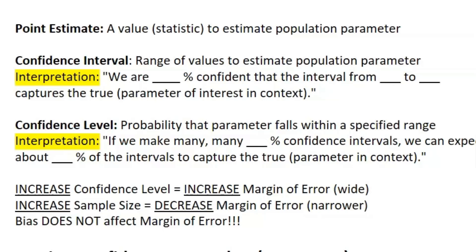Today we're going through all the content you need to know for Unit 6 of AP Stats, which is inference for categorical data — more specifically, proportions. The first thing to touch on is what a point estimate is: it's a statistic that estimates your population parameter. For example, if you have a confidence interval of three to five, your point estimate would be right in the middle — four.